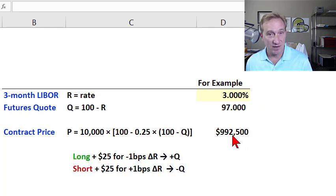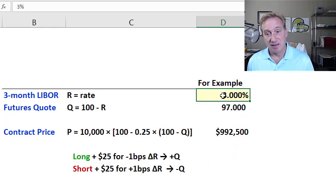That's why it's sized this way. I have here an example of a LIBOR rate of 3% that is implied by a futures quote of 97, and you can see a contract price of $992,500.